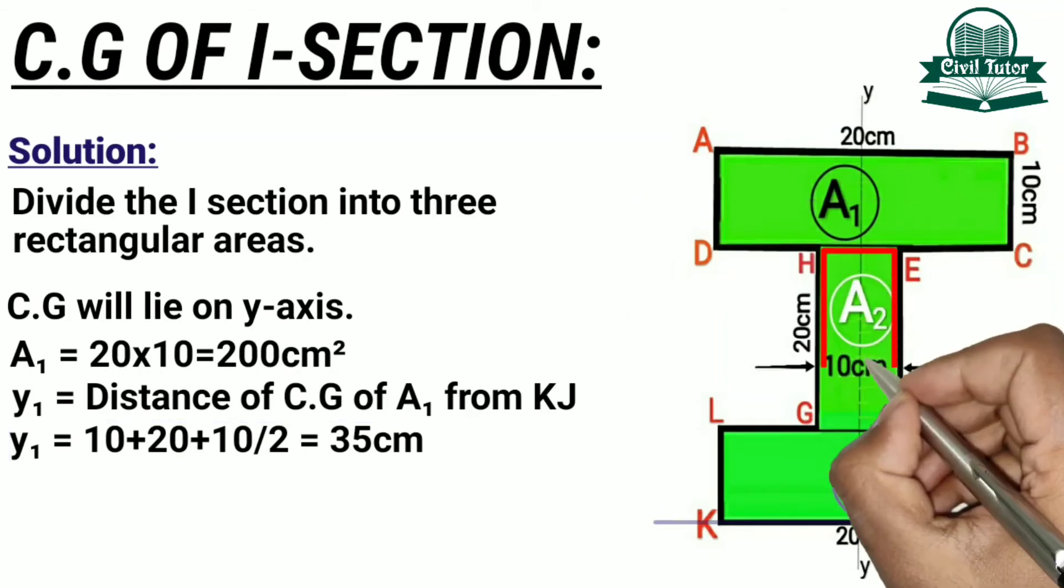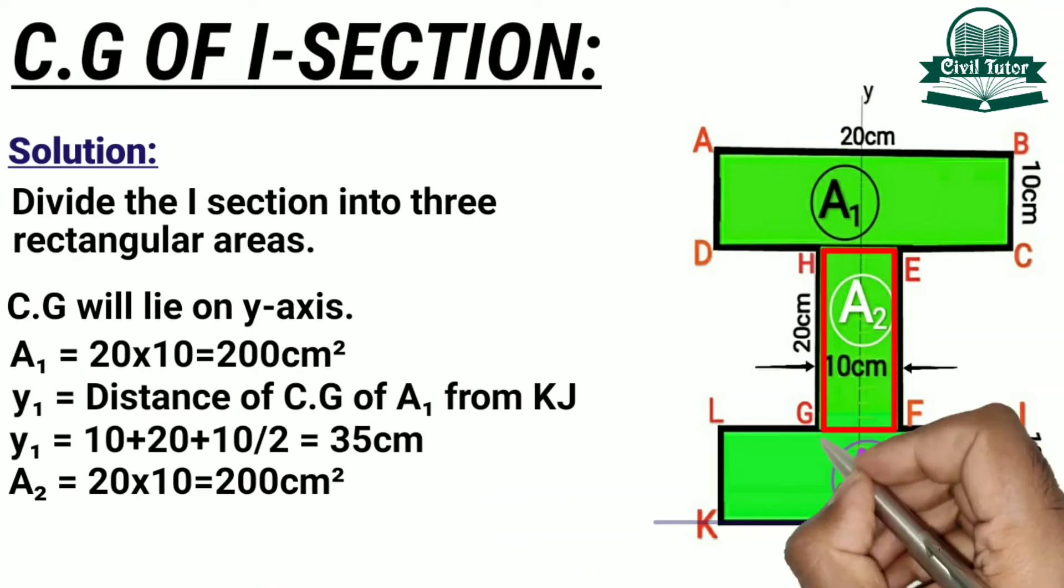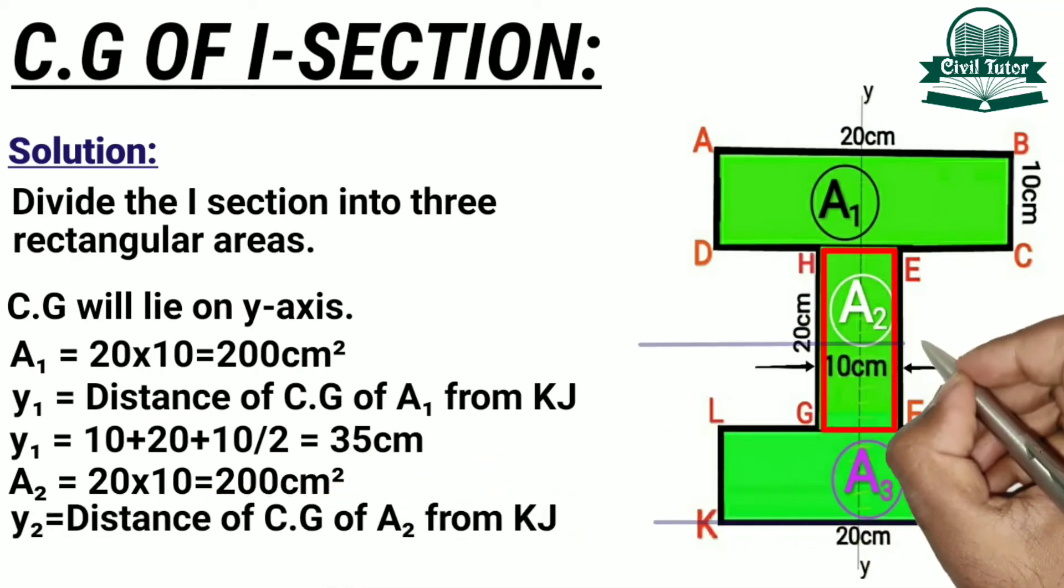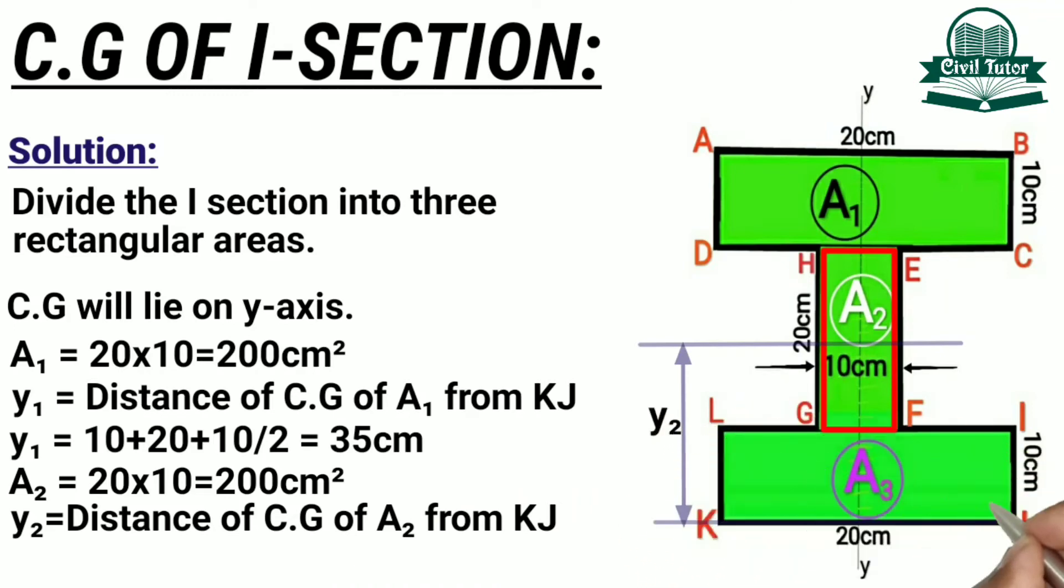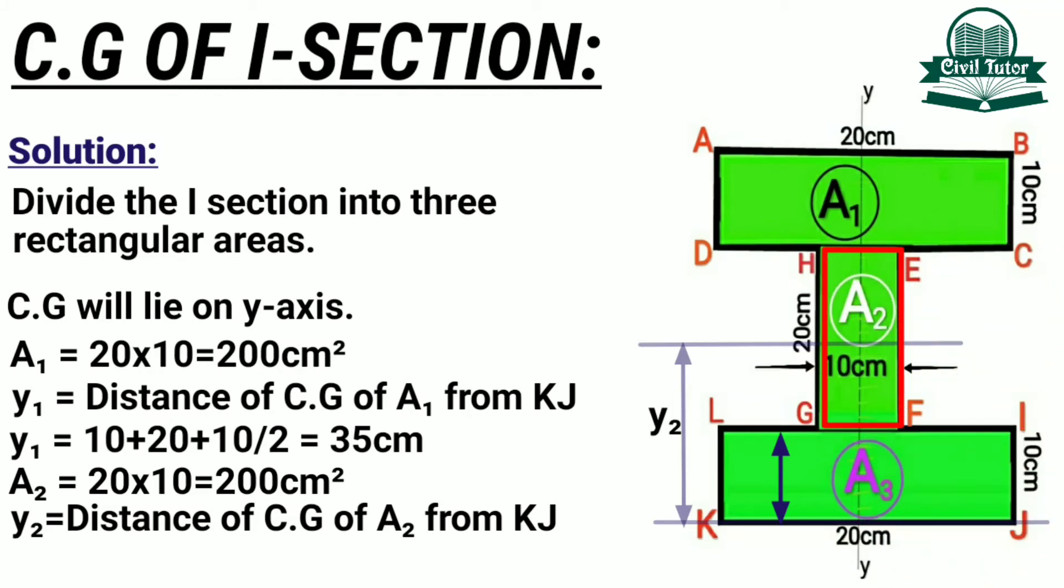Let A2 be the area of rectangle EFGH which is 20 cm x 10 cm. So A2 will be equal to 200 cm square. And let Y2 be the distance of area 2 from the reference line KJ. So Y2 will be equal to 10 cm plus the centroid of this rectangle EFGH which is 20 divided by 2. Finally, we will get Y2 equal to 20 cm.